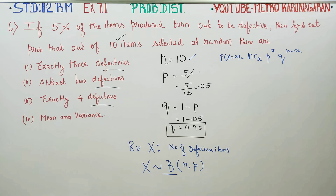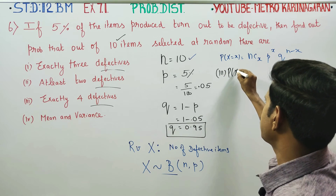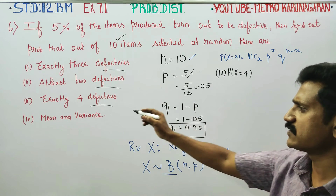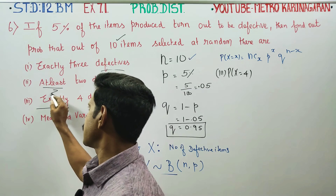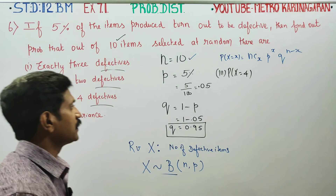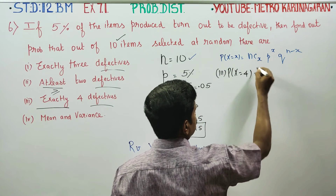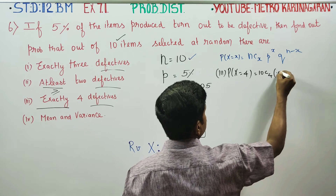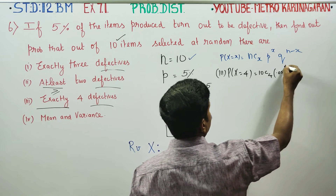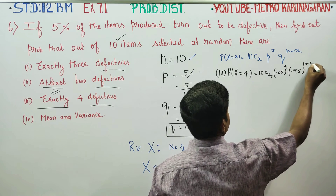The third subdivision is exactly 4 defectives, that is x equal to 4. Using the binomial formula: n is 10, so 10C4 multiplied by p to the power 4, where p is 0.05, and q to the power n minus x, that is 0.95 to the power 6.